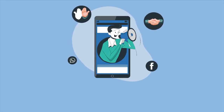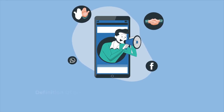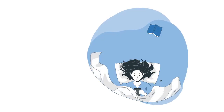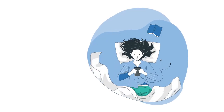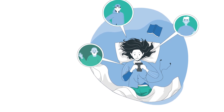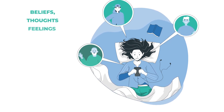In the first module, we introduced the definition of social intelligence as social competence, or the ability to deal with others successfully and have perceptions about their beliefs, thoughts, feelings, and behaviors.